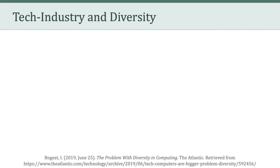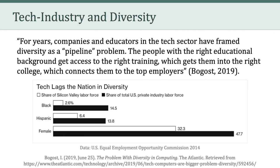Now, I'd like to transition to a related topic: the tech industry and diversity. I'm sure many of you are aware that diversity in the tech industry has been criticized as being pretty terrible. In fact, a 2019 article argued that for years, companies and educators in the tech sector have framed diversity as a pipeline problem — the people with the right educational background get access to the right training, which gets them into the right college, which connects them to the top employers. So we're seeing this kind of vicious cycle that self-perpetuates inequality. In the graphic here, we can see the relationship between technology diversity and national diversity.